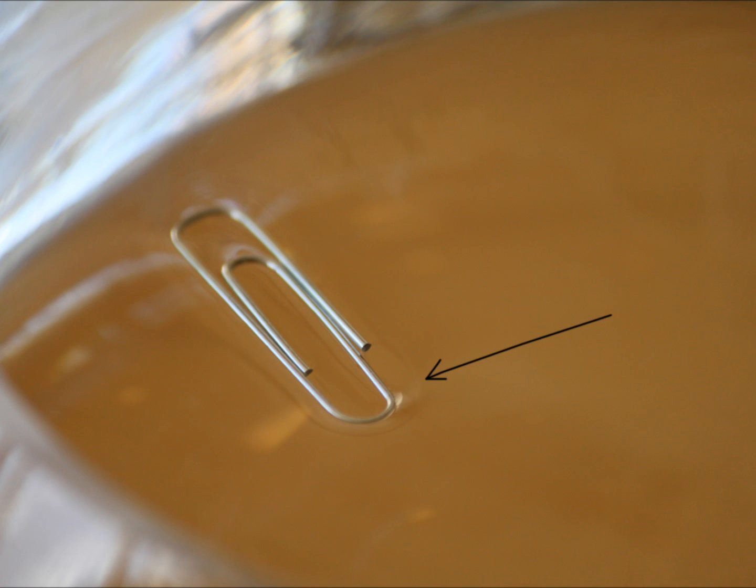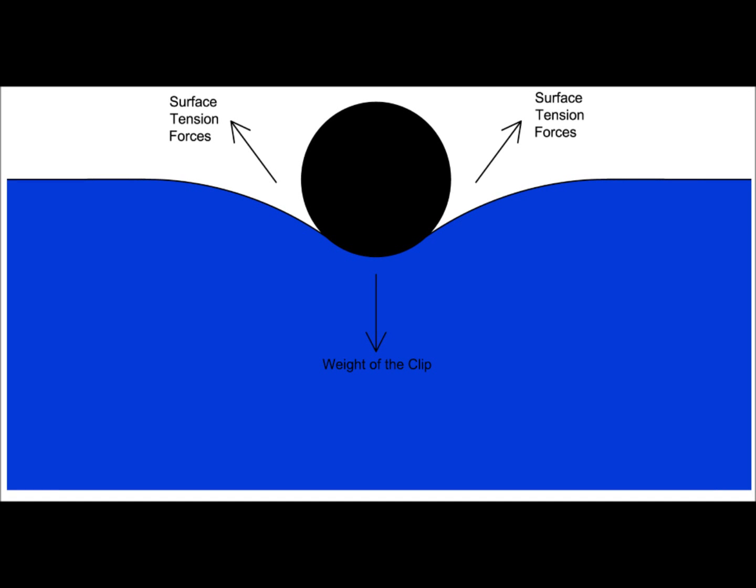The water surface was somehow bended near the clip, as you can see in this picture. If we draw a cross section of the clip on the surface of water, we can see something like this one. Here, actually the weight of the clip is balanced by the surface tension forces.